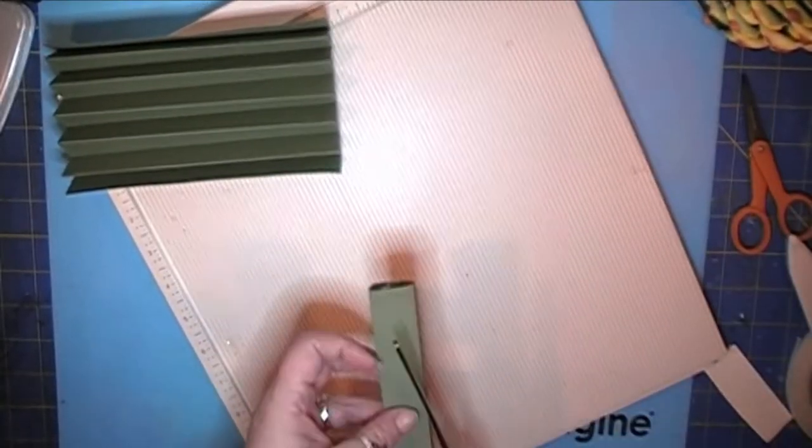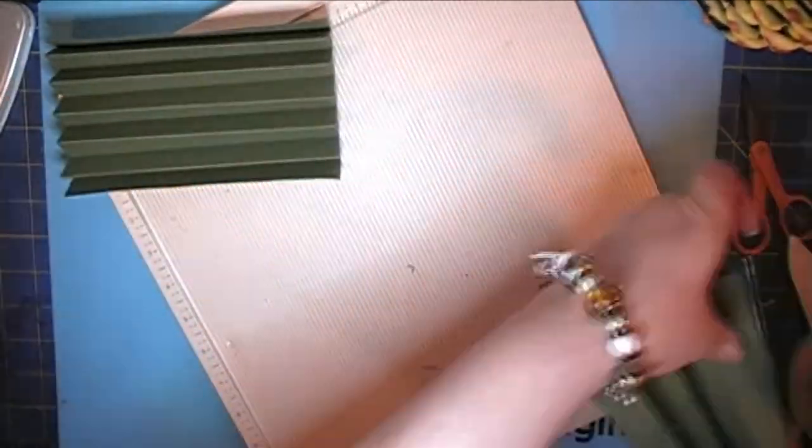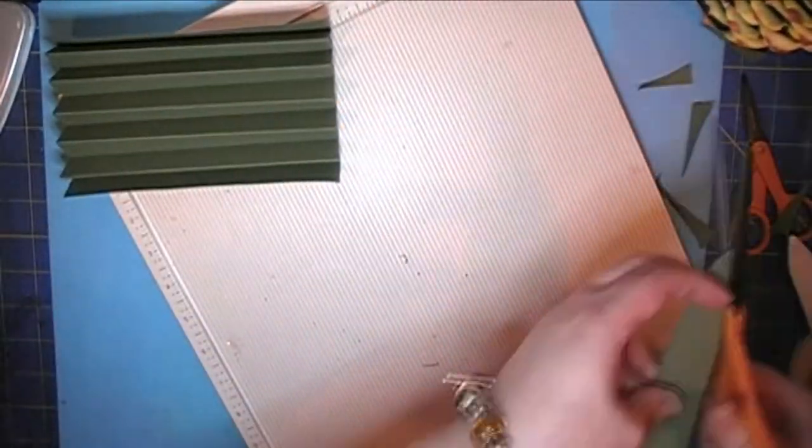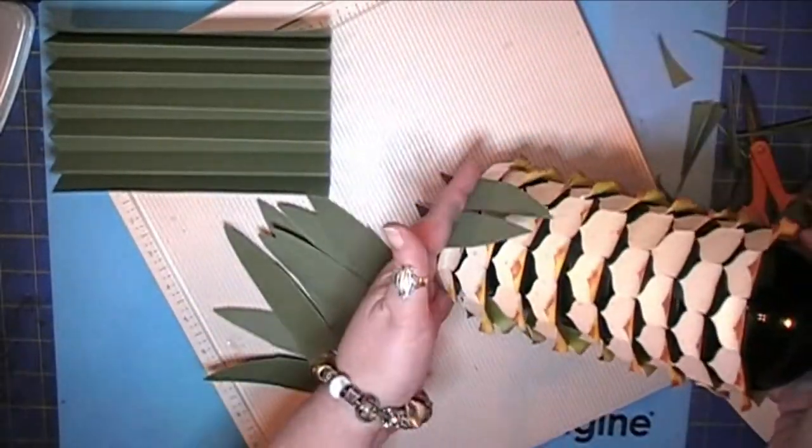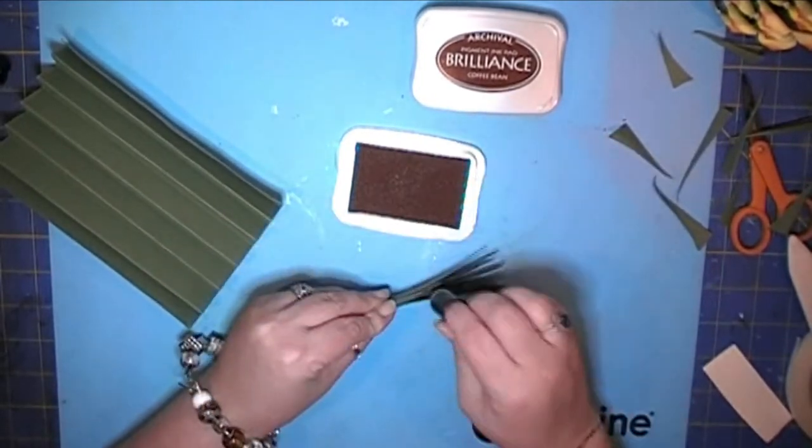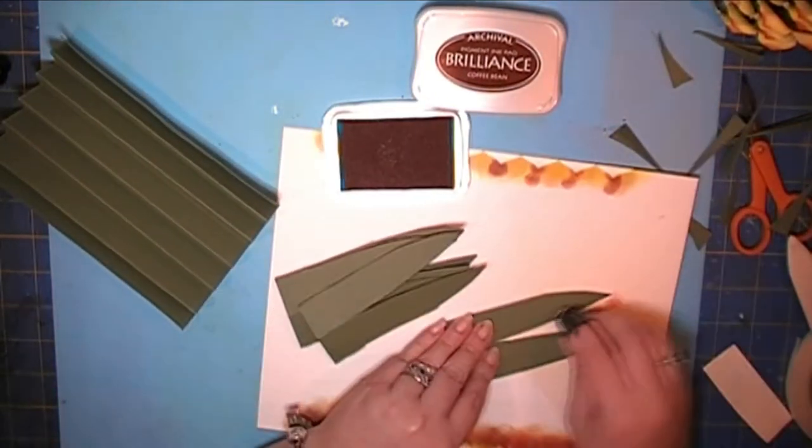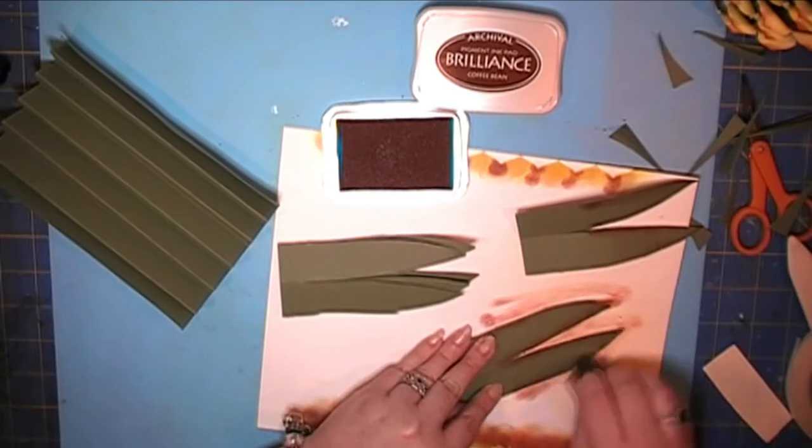We can move on to the leaves, fronds, whatever you want to call them. I scored a large sheet of green cardstock about one inch increments, and then cut and divided them not quite evenly. I think it was like five inches and seven inches, and now the five inch pieces.